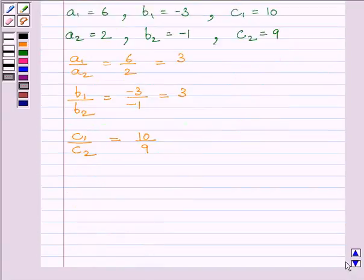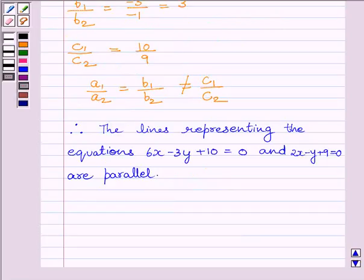Here we can see a₁ upon a₂ equals b₁ upon b₂ but not equal to c₁ upon c₂. Therefore, by key idea, the lines representing the equations 6x minus 3y plus 10 equals 0 and 2x minus y plus 9 equals 0 are parallel.